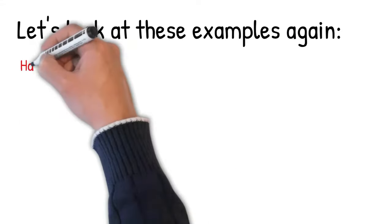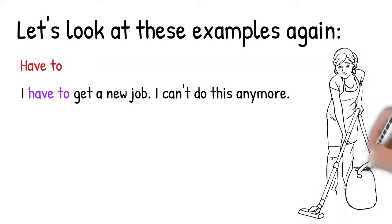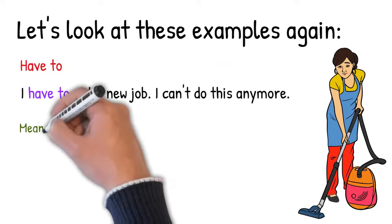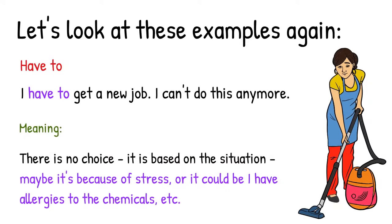But let's look at the example with have to: 'I have to get a new job, I can't do this anymore.' This one is slightly different. The meaning here is that there is no choice, based on the situation beyond my control — not my feelings, but the situation. For example, maybe it's because of stress, or maybe I have allergies to the chemicals I use when I clean. So 'I have to' — it's beyond my control and based on the situation.